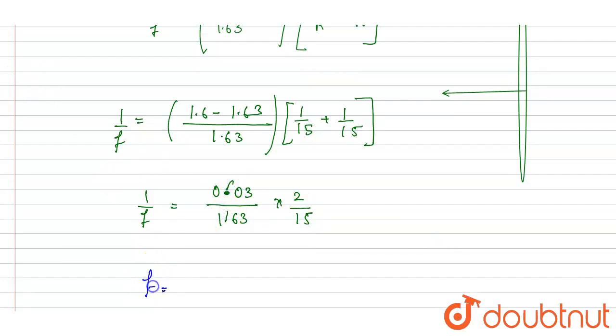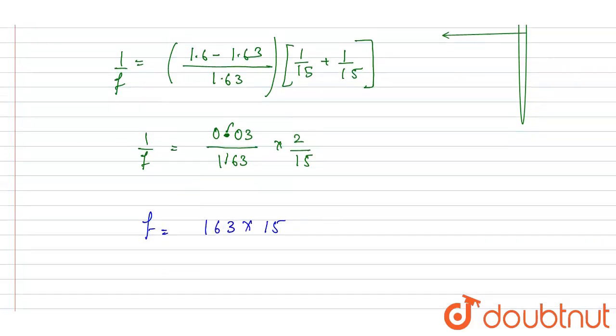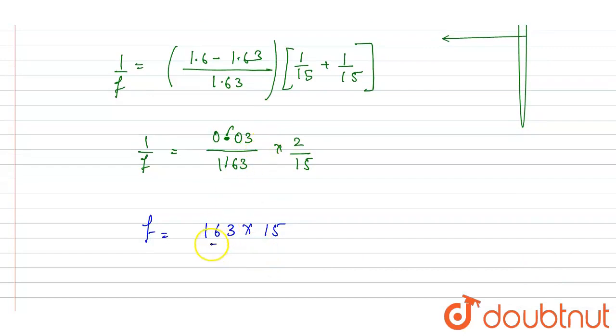So this point you can remove from here and if you see, f is equals to 1.63 into 15 by... if you see this is 6, 3 into 2, so this 3 can be cancelled out, and you got if you see it is by 2, that is 407.5 centimeters.